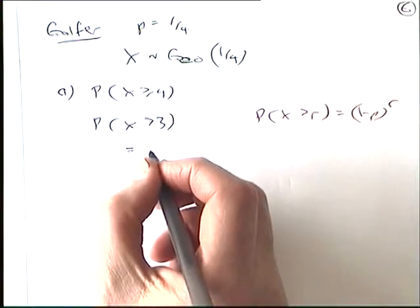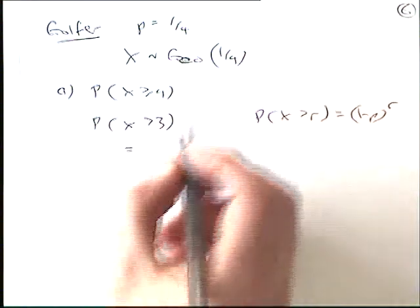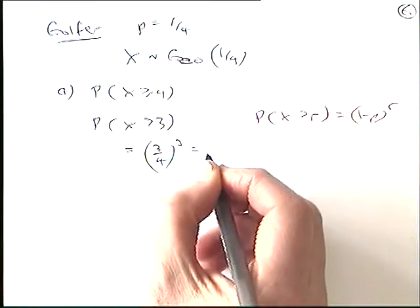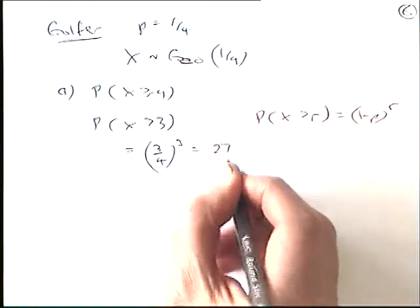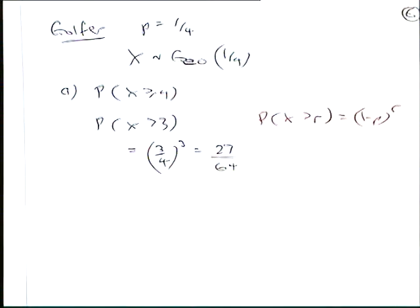And then we can use our X is greater than R being 1 minus P to the R formula. So 1 minus P in this question? It's 3 quarters to the power of 3. 3 times 3 times 3? 27. 4 times 4 times 4? 64. There we go for that one.